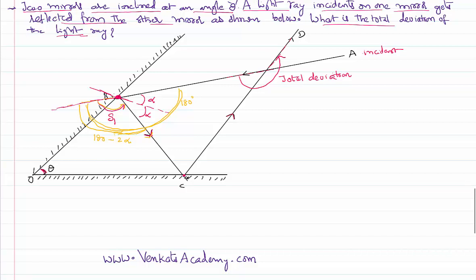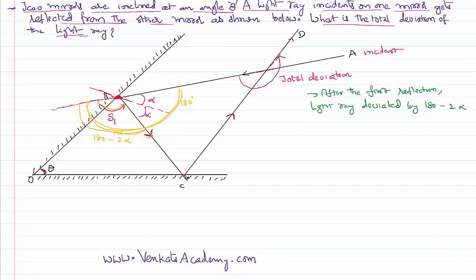It is very clear that after the first reflection, the light ray has deviated its path by an angle of 180 minus 2α, where α is the angle of incidence. This deviation is in the clockwise direction.